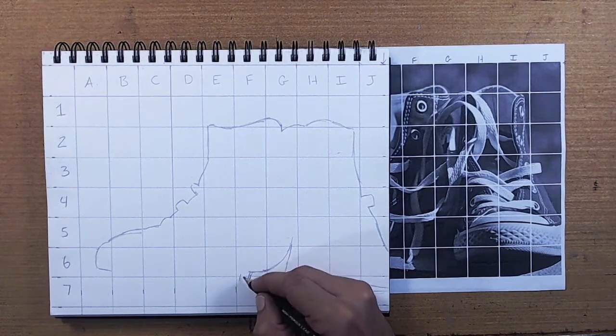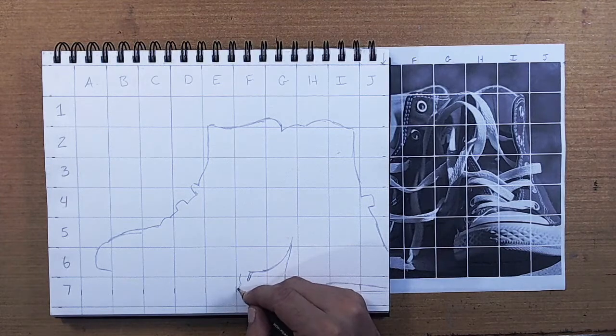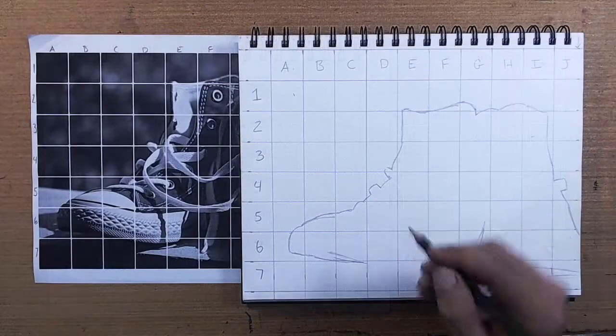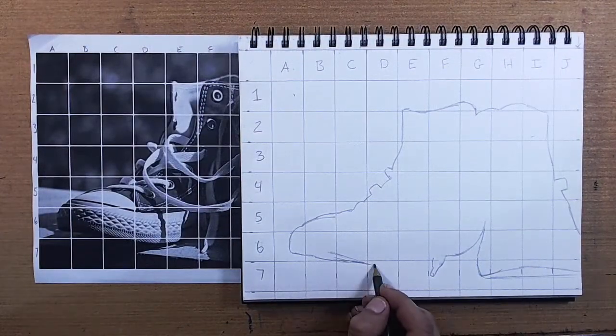Once the contour drawing is complete, we can still go back and make small adjustments to where some of our lines landed for accuracy and unity.